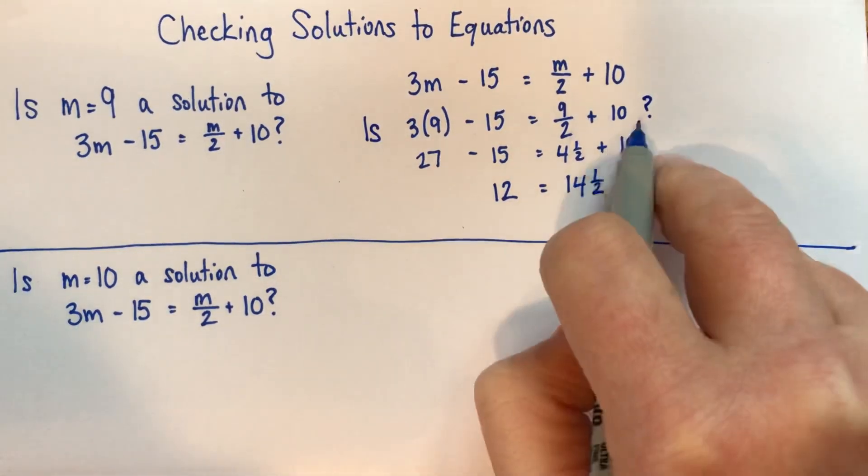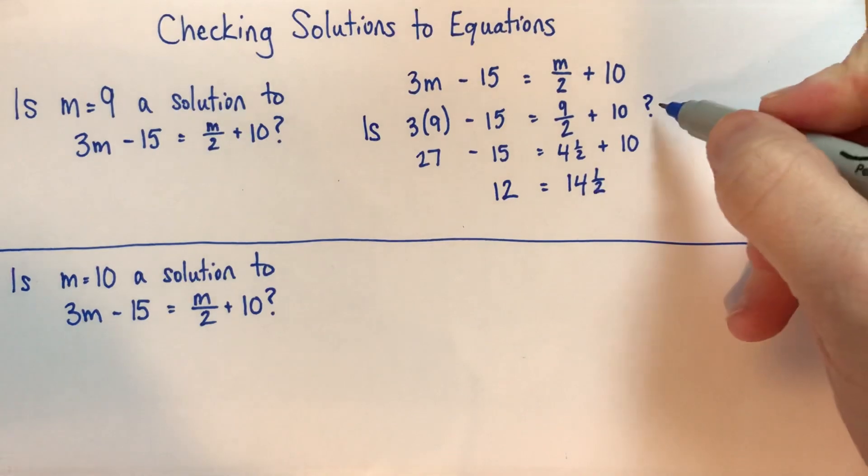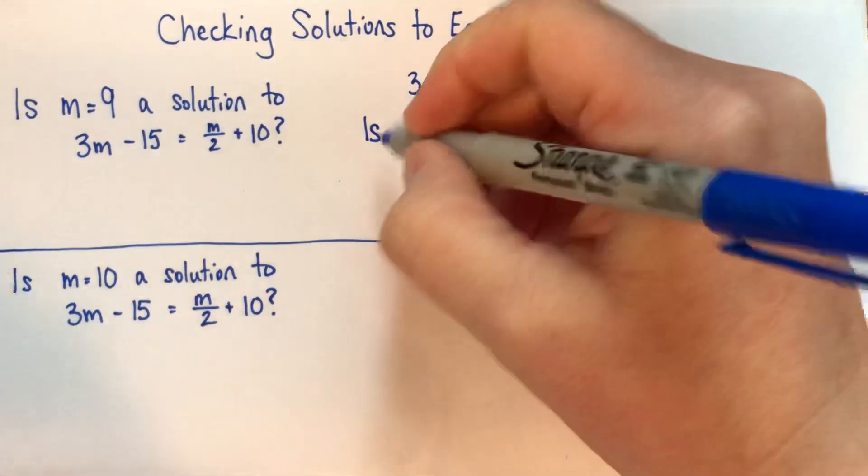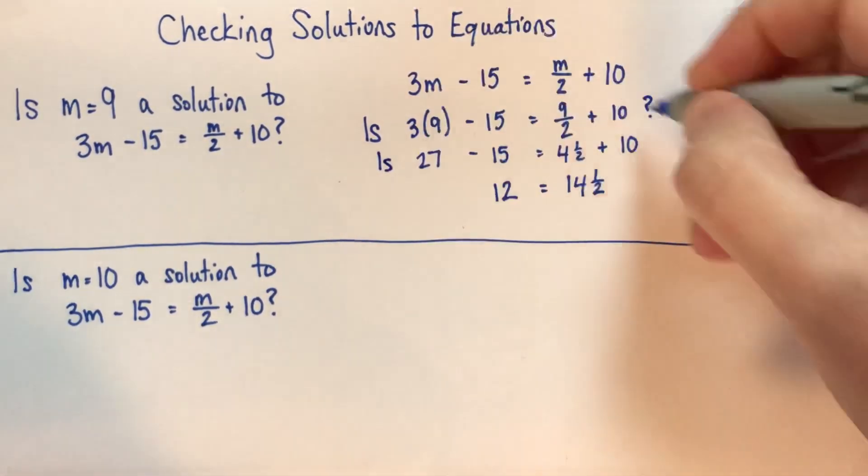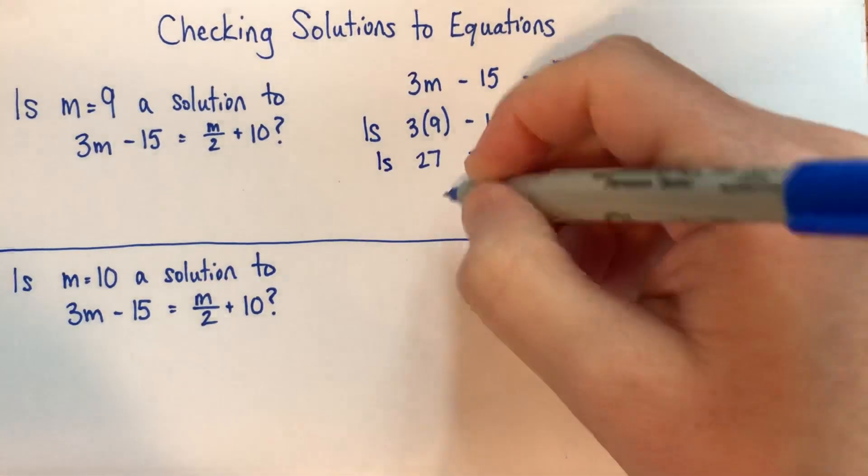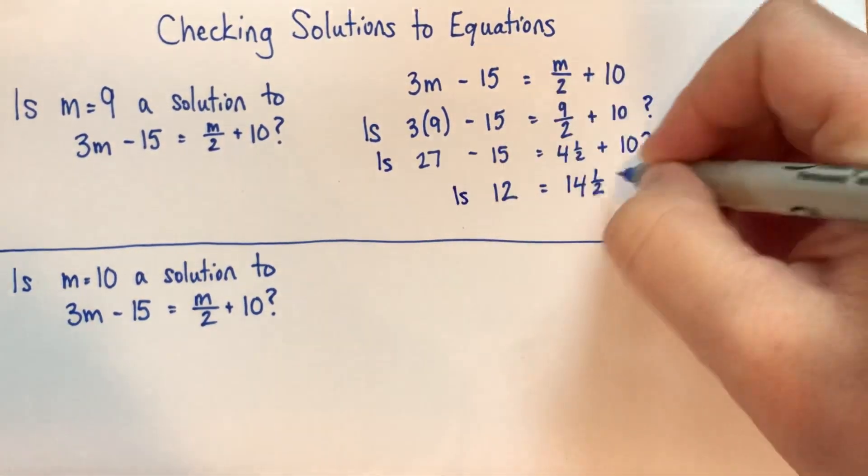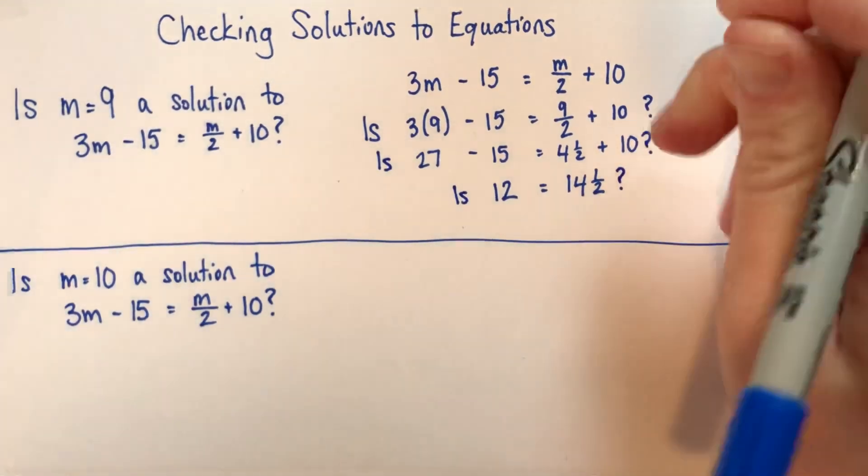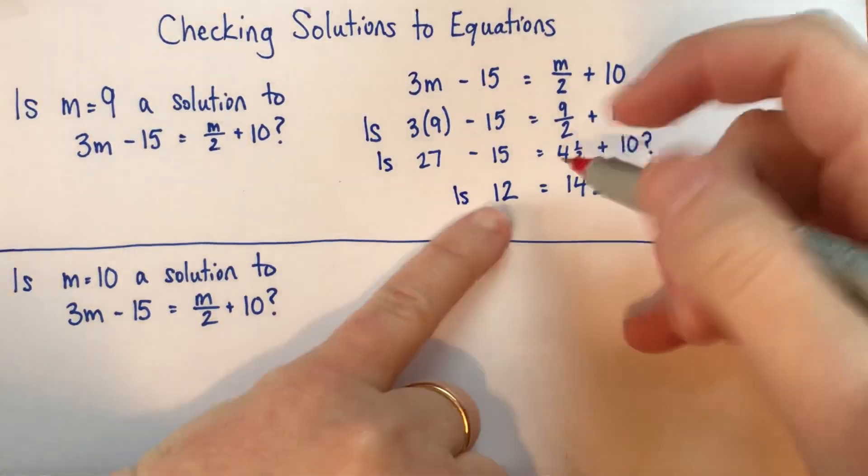So it's three characters: there's an I, an S, and a question mark. And it shows what you were thinking, is that the same as that? If we do this, we should do it on every line. Is that the same as that? Is 12 equal to 14 and a half? And of course the answer is no.